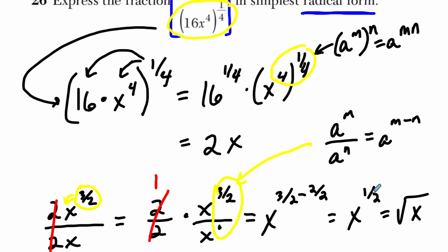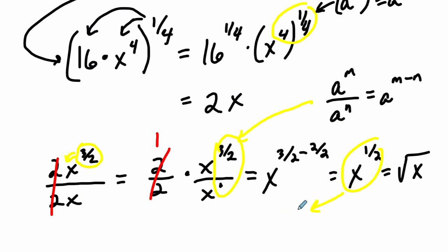So when you see something like this right here, what we want to think about is this definition. That x to the 1 over n power is the nth root of x. Another nice definition to think about.